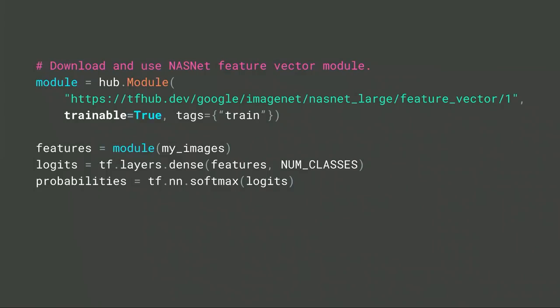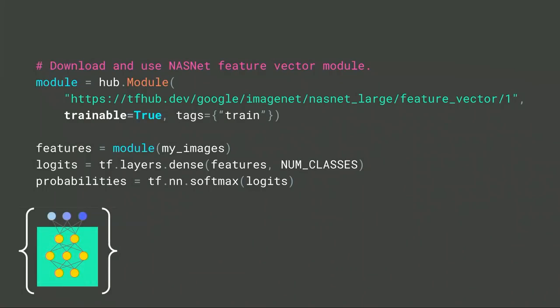Those modules are trainable. So if you have enough data, you can do fine-tuning by setting the trainable parameter to true and selecting the training graph, which trains the entire thing along with your classification. The caveat is that you have to lower the learning rate so you don't ruin the weights inside the module. But if you have enough training data, it can give you even better accuracy.